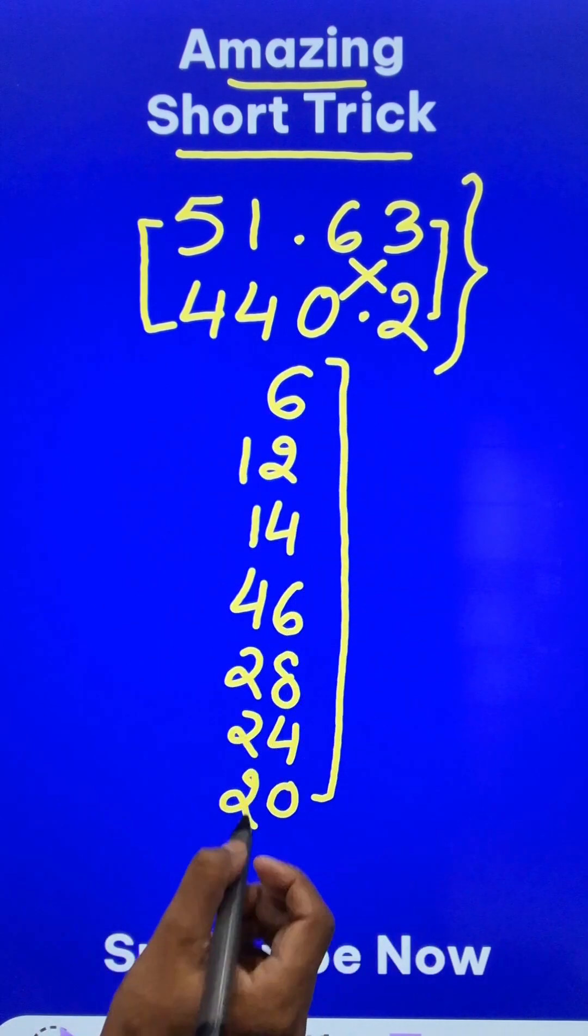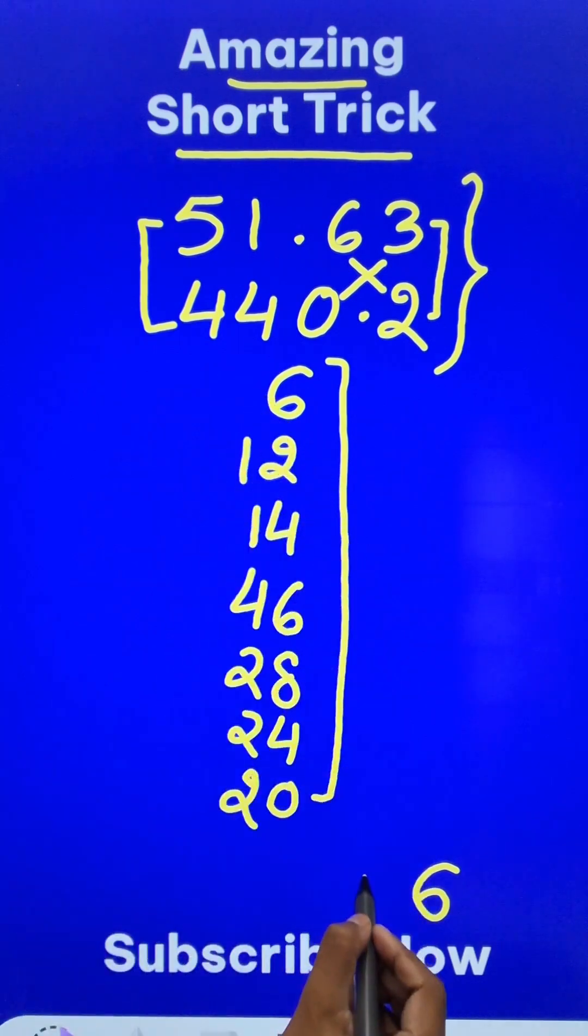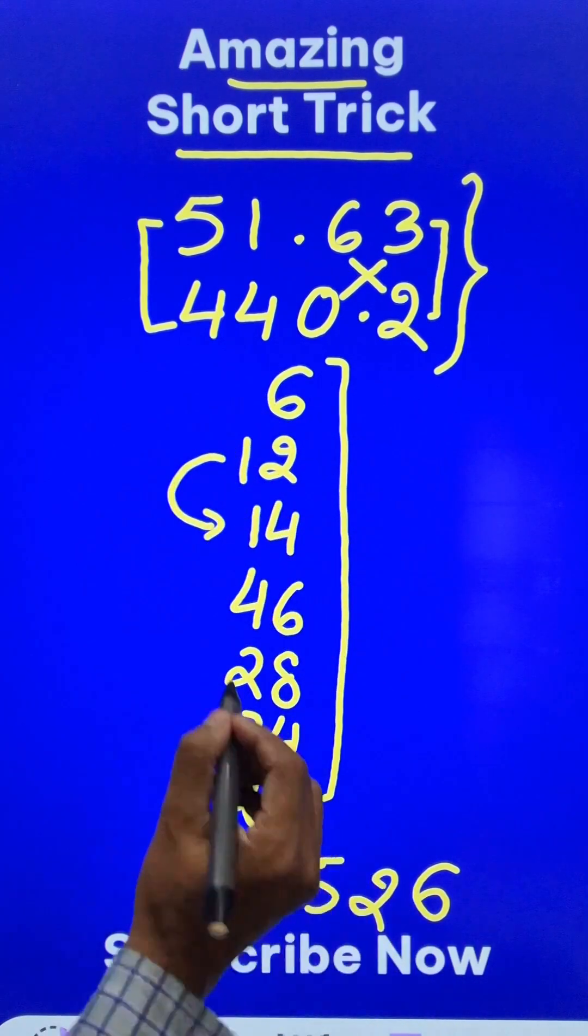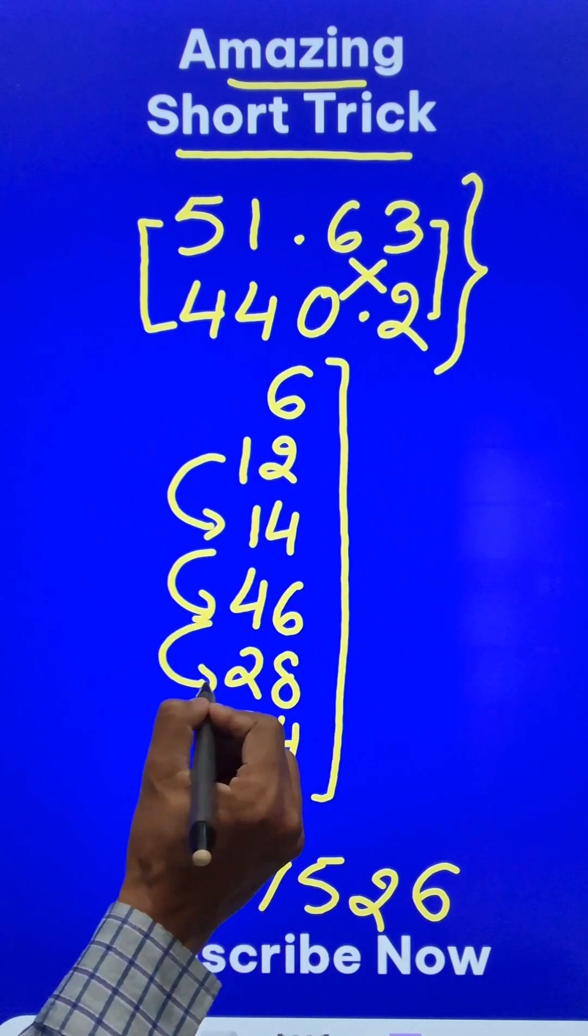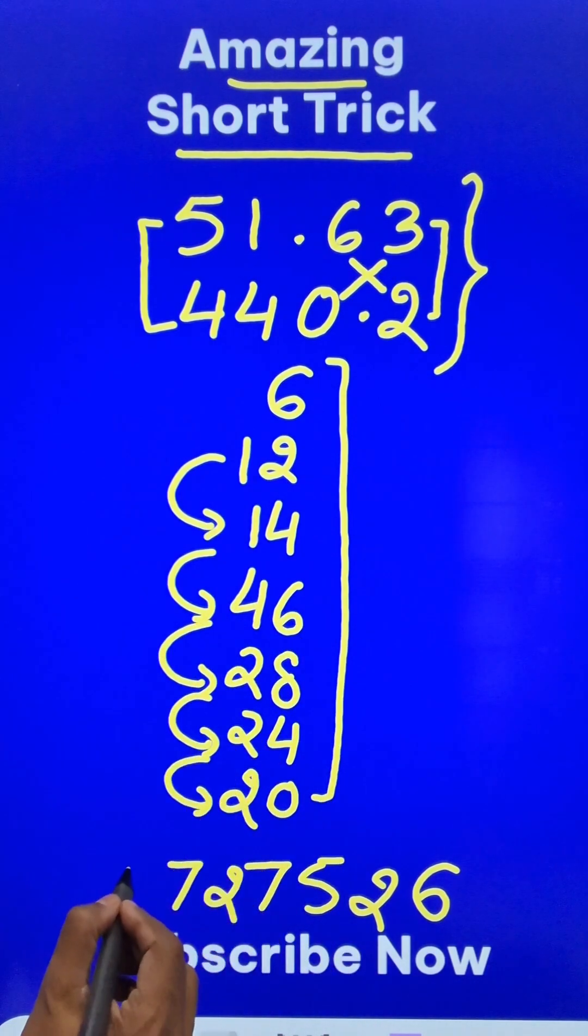Now having written all these numbers, you have to start with this number. 6 as the last digit of your answer and then 12 means 2, 1 carry. So 14 means plus 1, 15. So 5 and a 1 carry and then you have 47. So 7, 4 carry, 32. So 2, 3 carry, 27 means 7 and 2 carry means 22.